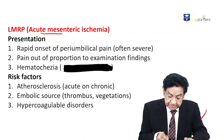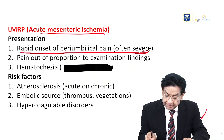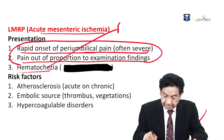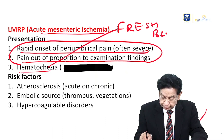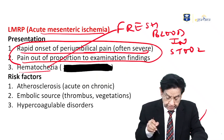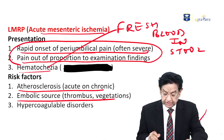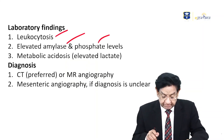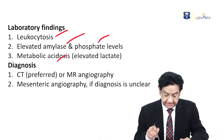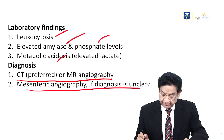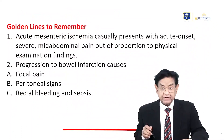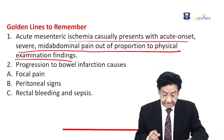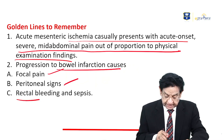Quick recap: Acute mesenteric ischemia presents with rapid onset of peri-umbilical pain, often very severe — pain out of proportion to examination finding. There may be hematochezia or fresh blood in stool. Risk factors include atherosclerosis, acute or chronic embolic sources such as thrombus or vegetation, and hypercoagulable disorders. Lab findings: leukocytosis, raised amylase, raised phosphate, and metabolic acidosis due to increased lactate. Diagnosis is by CT or MRI angiography; mesenteric angiography if diagnosis remains unclear.